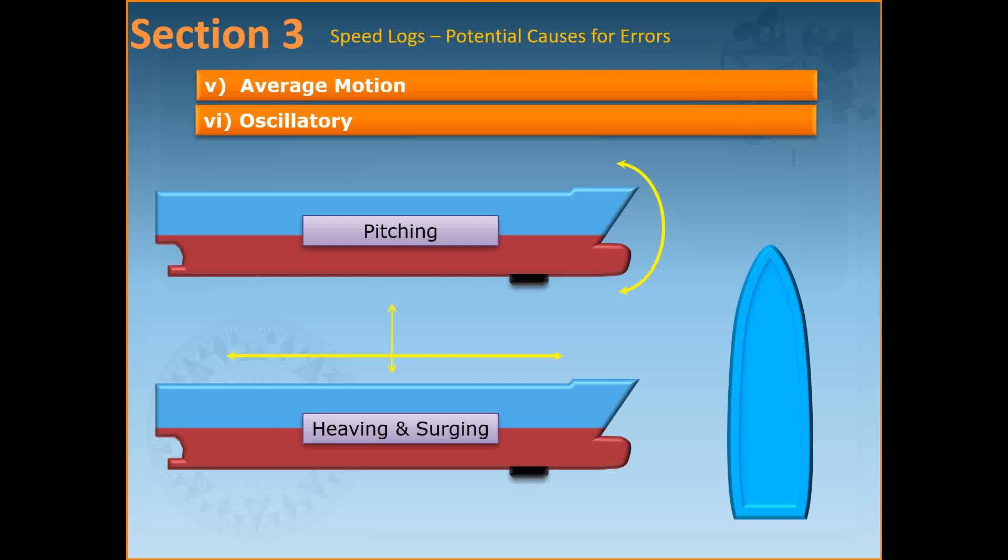Oscillator errors: instantaneous readings may be in error when pitching, rolling, heaving and surging. In pitching for example the log sensor is mounted well below the pitching center and probably well forward or well aft of it. The pendulum effect means considerable linear acceleration of the sensor causing errors which can be significant.